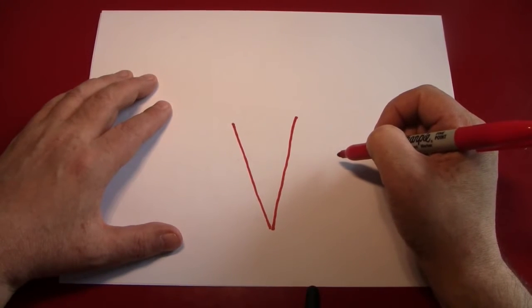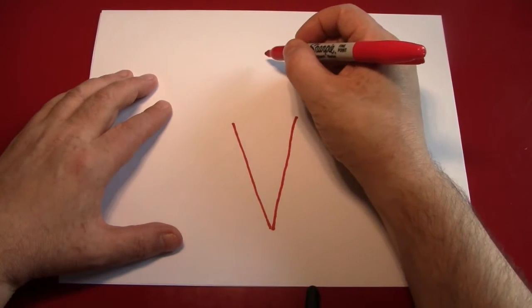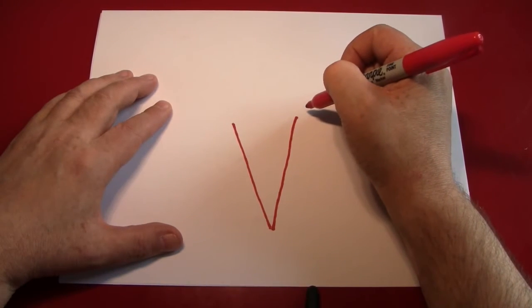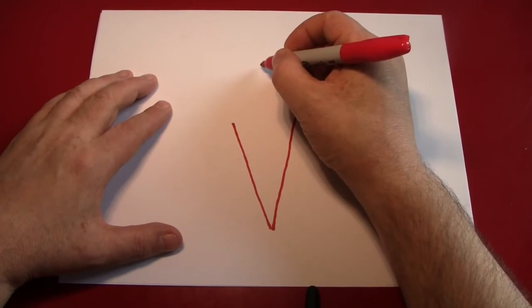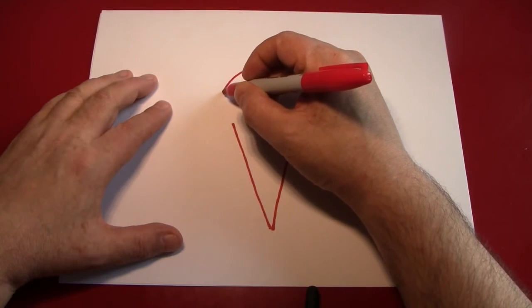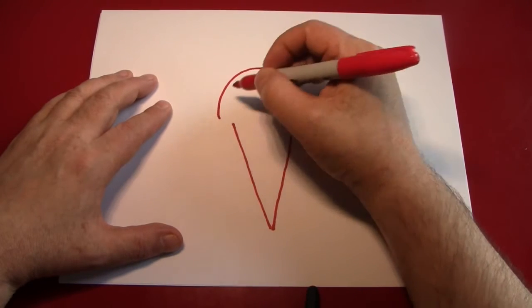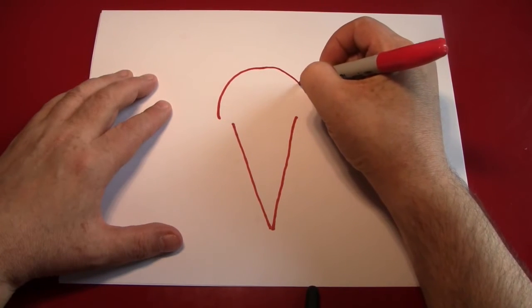Next, we're going to start the ice cream part. An ice cream scoop, as you know, is a round shape because of the shape of the scoop itself. We'll estimate that it should start about here and bring down a couple of curved lines that go out a little bit further than our cone.